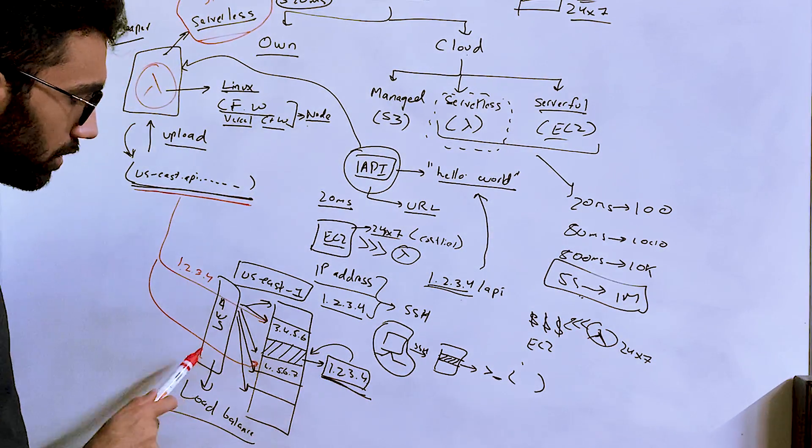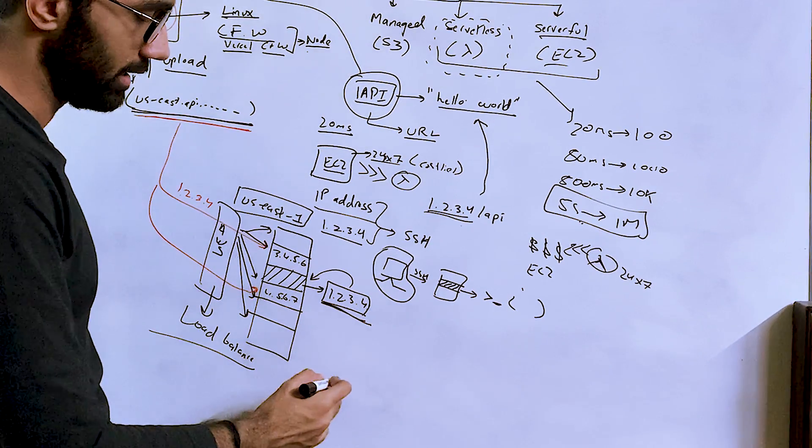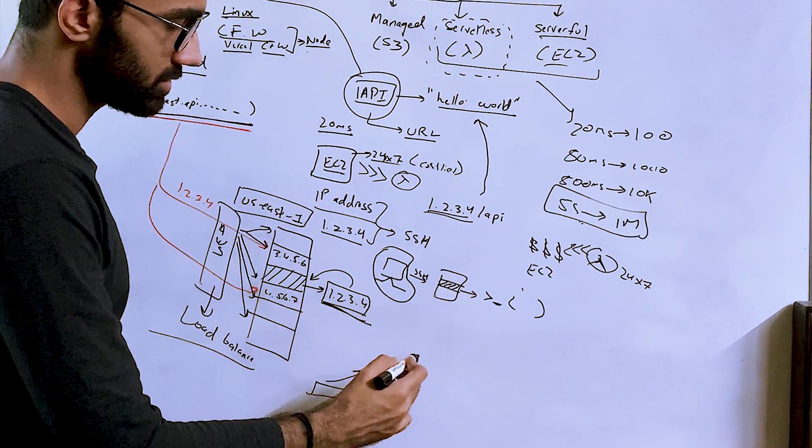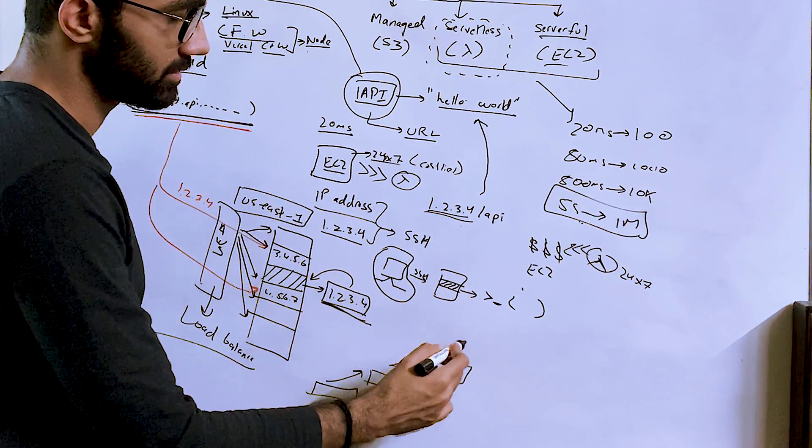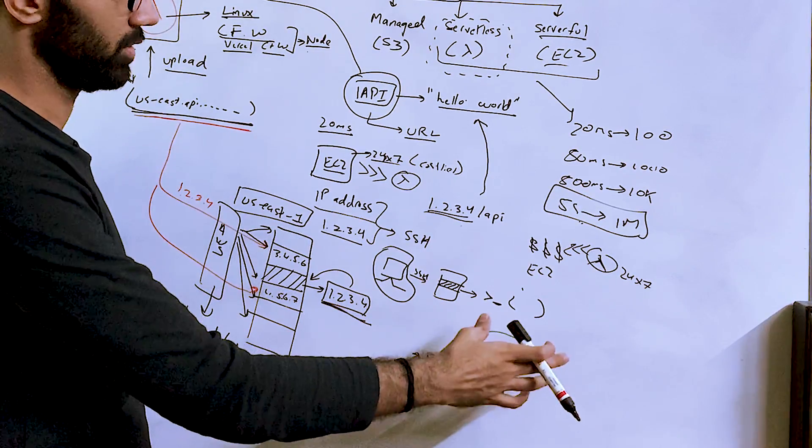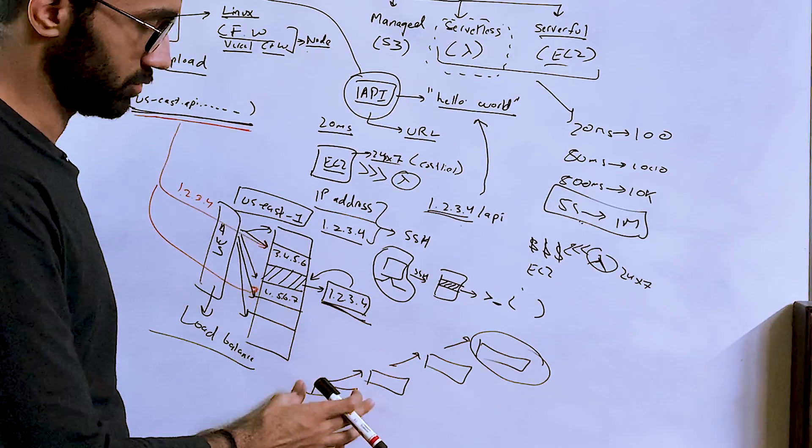Because AWS is doing a lot of work for you. And we know that whenever you go up in the abstraction layer, and you are using all the resources, then the price actually increases. If you're using a higher abstraction SaaS product software, the price is much more compared to using a lower abstraction thing.